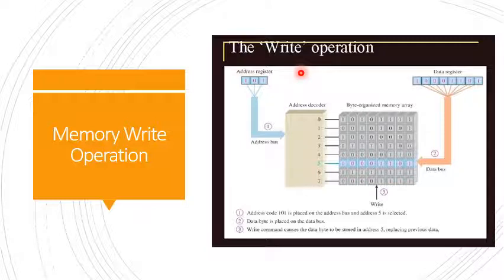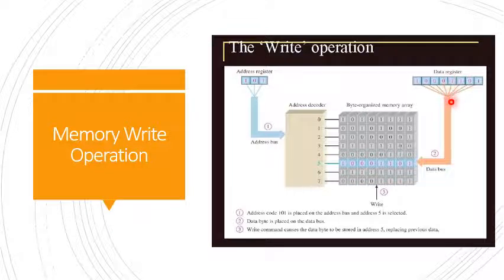Let us look closely at the memory write operation and the steps involved. First, it places the address of the location to be written on the address bus. Next, it places the data to be written on the data bus. Then it activates the memory write control signal on the control bus and waits for the memory to store the data at the address location. Then it drops the memory write control signal to terminate the write cycle.